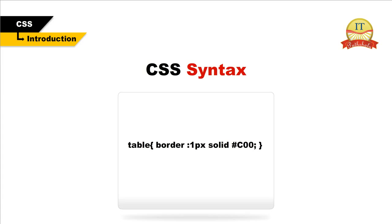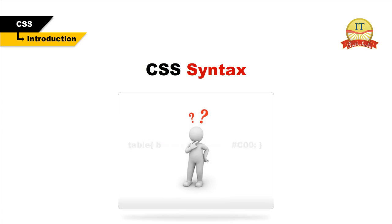You can define a table border as shown below. Here, table is the selector, border is the property, and the value one pixel solid #C00 is the value of that property. So you have now learned about the CSS syntax. But how do you incorporate this syntax into your website? Let us explore more.